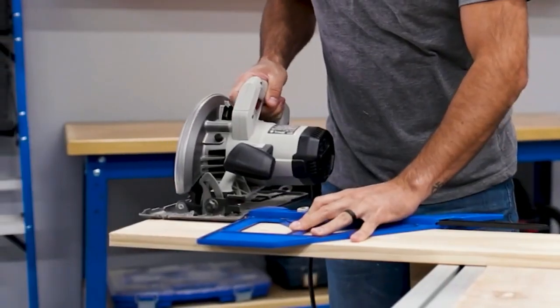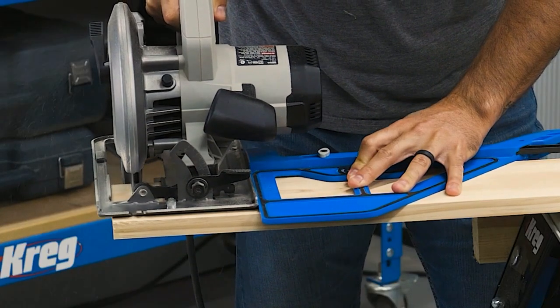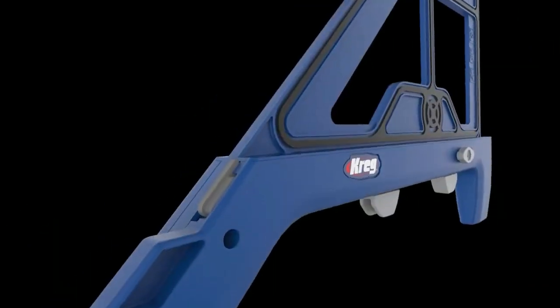All you have to do is align the indicator with your cut line and you know the portable crosscut is perfectly positioned to cut at that exact location.